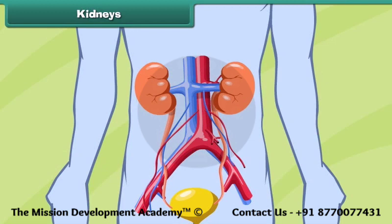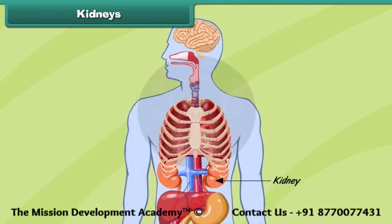Kidneys. The kidneys are organs that keep our blood free from unwanted substances called wastes. Our body has a pair of kidneys located just below the ribcage, one on either side of the body. The kidneys remove wastes from the blood and various body parts and thus keep us healthy.